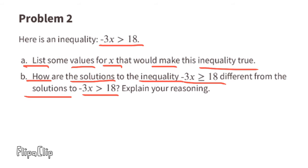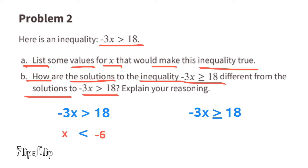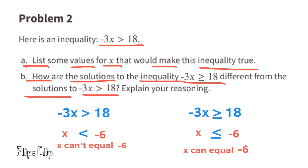Part b: how are the solutions to negative 3x ≥ 18 different from negative 3x > 18? Dividing both sides by negative 3 and flipping the sign gives x < negative 6 versus x ≤ negative 6. The difference is that with the strict inequality, x cannot equal negative 6, whereas with the 'less than or equal to' version, x can equal negative 6.